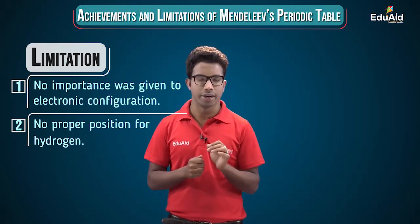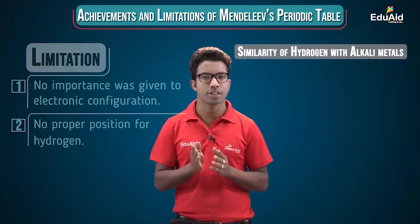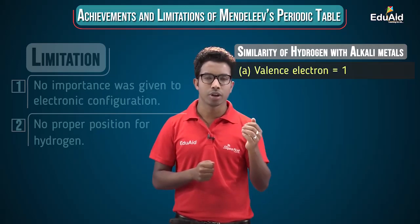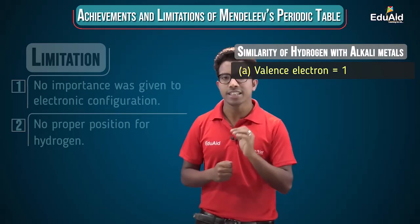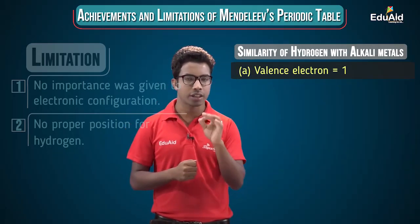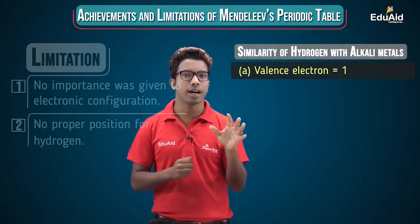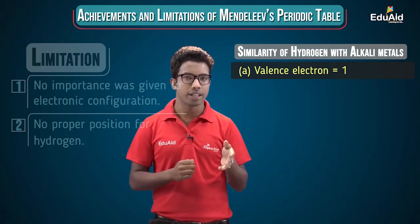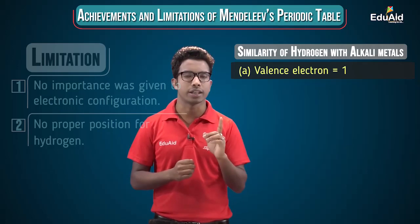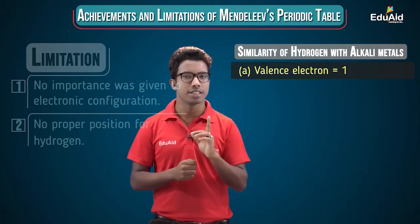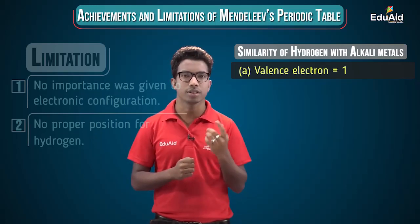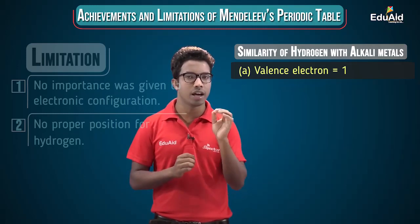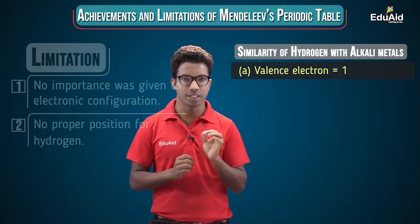Let's look at the similarities between hydrogen and alkali metals. Alkali elements like lithium, sodium, and potassium each contain one valence electron — the outermost electron. Hydrogen, which consists of only one electron, also has one valence electron. So hydrogen and all alkali metals share one valence electron — this is one similarity.